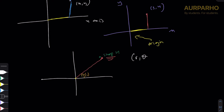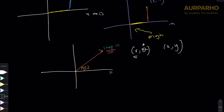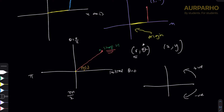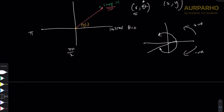The polar way of doing things uses r comma theta instead of x comma y, where r is the distance from the pole and theta is the angle it makes with the initial line (theta = 0). By convention, the anticlockwise direction is positive and the clockwise direction is negative. So for example, five pi over six would be in the second quadrant, and negative five pi over six would be below the initial line.